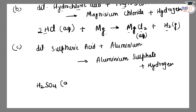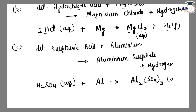In aqueous medium: H₂SO₄ (aqueous) + Al → Al₂(SO₄)₃ (aqueous) + H₂ (gas). Now balance the equation.